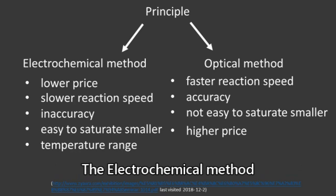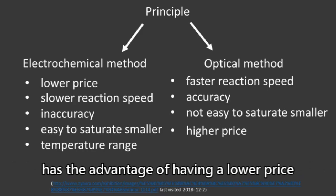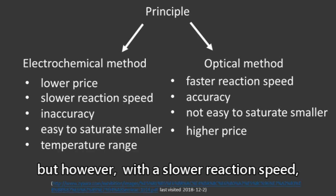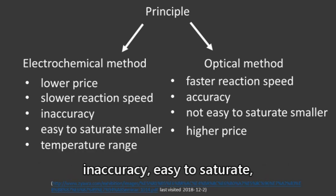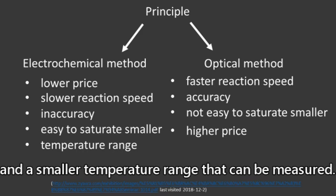The electrochemical method has the advantage of having a lower price, but however, with a slower reaction speed, inaccuracy, easy to saturate, and a smaller temperature range that can be measured.